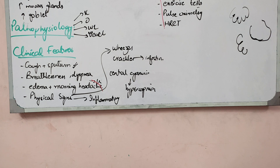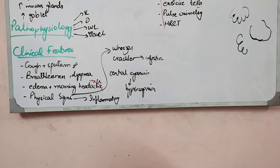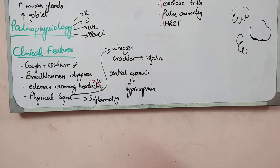Exercise testing tells you about the patient's dyspnea and breathlessness during activity. Pulse oximetry tells you about oxygen saturation — if there is hypoxia, the oxygen saturation will be decreased, possibly down to 70–80%. HRCT — high resolution CT scan — is very valuable in COPD because it shows the characteristics of emphysema and the condition of the airways, including narrowing.